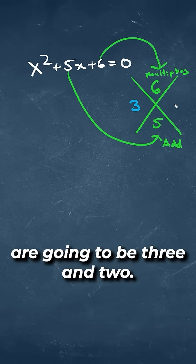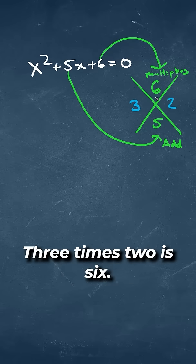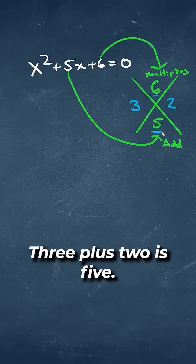Those two numbers are going to be 3 and 2. 3 times 2 is 6. 3 plus 2 is 5.